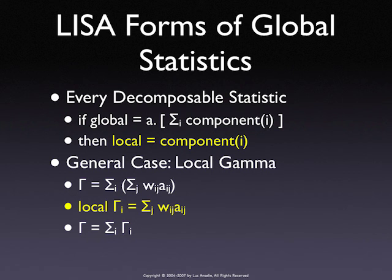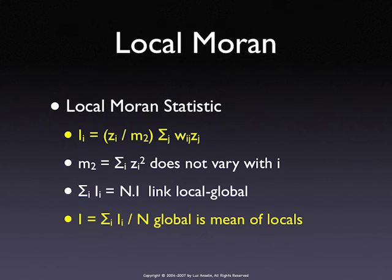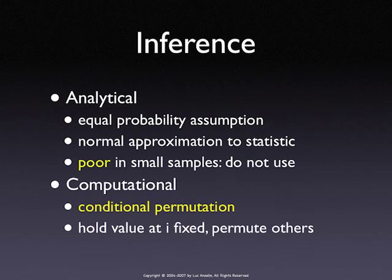Inference — same problem. How do we do this? It's very tricky, even more tricky than for the global measure. We can work analytically, but basically forget it — don't do it. Some software does it that way, but it's really not a good thing — it's a very poor approximation. The normal distribution is not a good approximation in most instances.